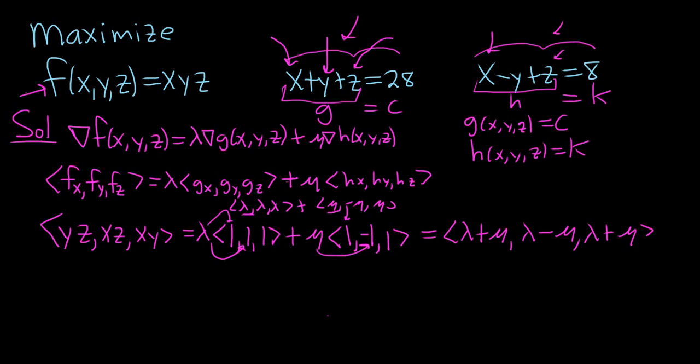These vectors are equal, so we can set each of the components equal. So we have yz equals lambda plus mu. Then we have xz equals lambda minus mu. And last but not least, we have xy, and that's equal to lambda plus mu.